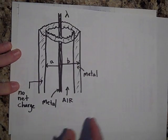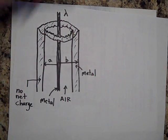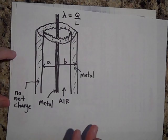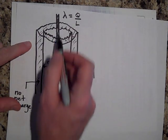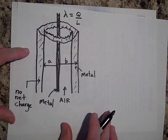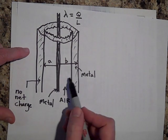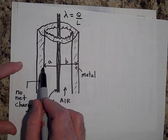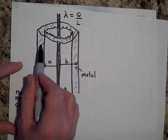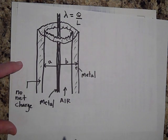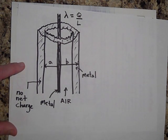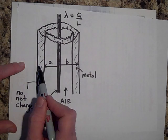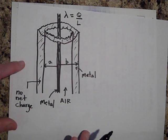We're going to say that the inner wire has a linear charge density of lambda — lambda is charge per length. Here's the wire going this way with linear charge density lambda. There's air here, and then at radius a, that's the inner radius of the outer cylindrical shell. This is a metal shell wrapping around, with some thickness — it runs from a to b, b being the outer wall of the cylindrical shell.